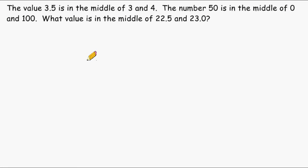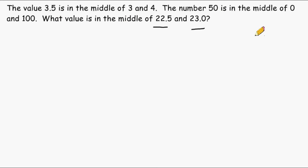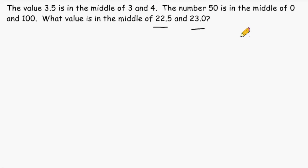In this problem we are trying to figure out what value is in the middle of 22 and a half and 23. It is given in the problem that 3.5 is in the middle of 3 and 4, and that 50 is in the middle of 0 and 100. Most people can just look at 3 and 4 and know that 3 and a half is in the middle of those two numbers, and most people can look at 50 and say that is right in the middle of 0 and 100.